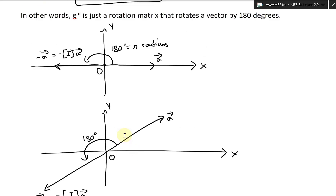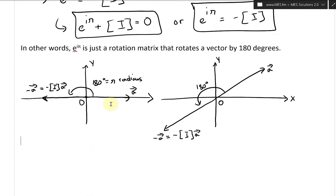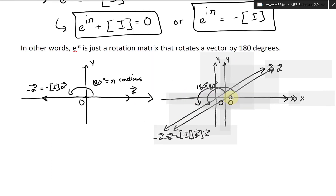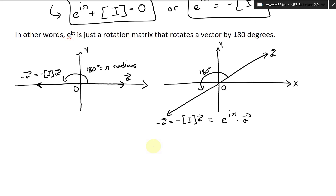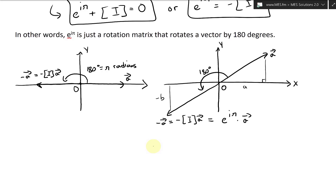So this is absolutely fascinating. When you have vector A, this equals negative the identity matrix times vector A, rotating it 180 degrees. Since they're equal, multiplying by e to the i pi times the vector is like shifting it to the opposite direction. If you have components A and B, you're going to get negative A and negative B — you're just going backwards. That's fascinating stuff.